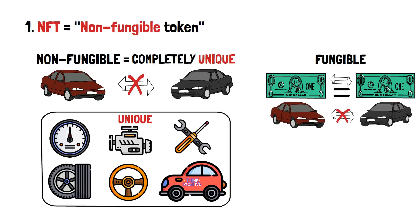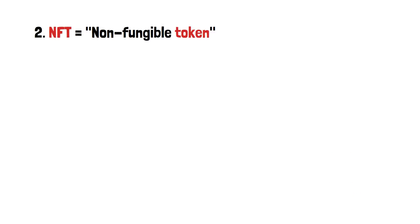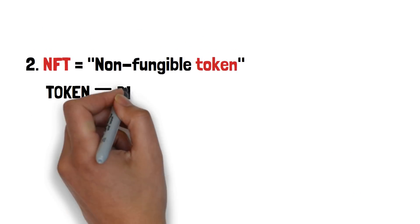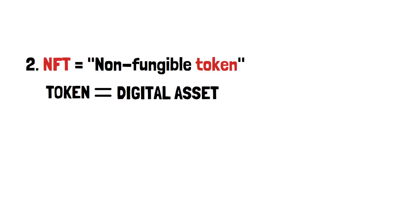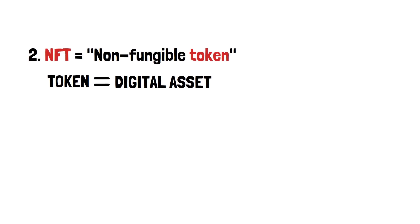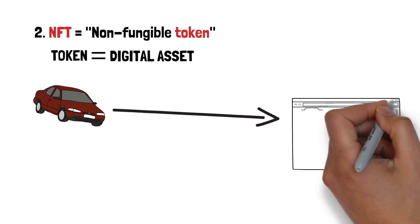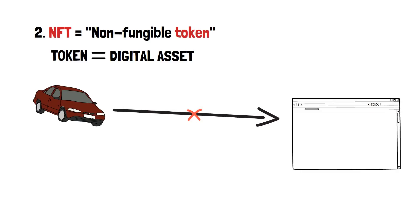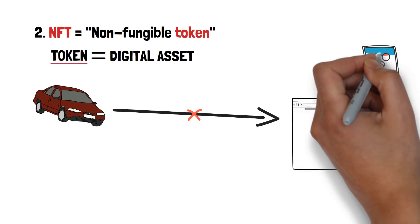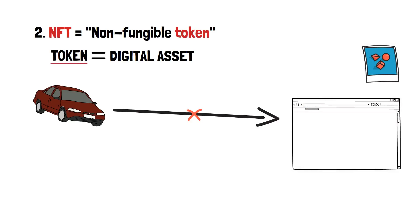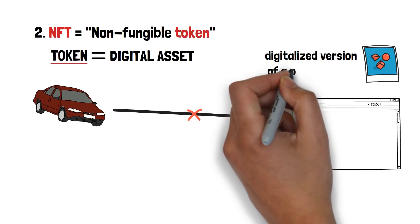An example of a fungible asset would be the one-dollar bill. The value of your one dollar will always be equal to the value of another dollar bill, and you can trade your one dollar for any other one-dollar bill out there — something you would not be able to do with your car. Following all of that, a token is simply a digital asset. Tokens are used as representations of different asset kinds. You can't physically take your car and put it on the internet — that's why you need some sort of a digital representation tool, and this is where tokens come in.